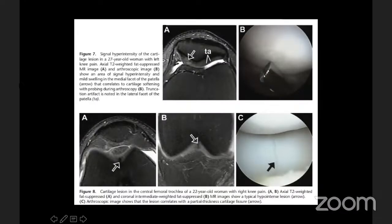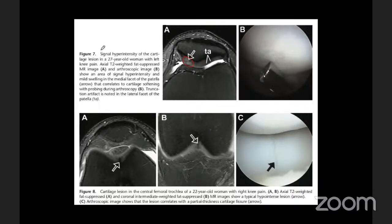From the article: if you see a focal area of signal hyperintensity within the articular cartilage, do not ignore it. This signal hyperintensity may correspond to cartilage softening on arthroscopy. When the arthroscopist probes this area, the cartilage feels unhealthy, indicating an internal derangement within the articular cartilage. When you see signal brighter than normal articular cartilage, we call this chondral softening.